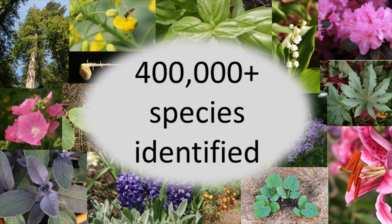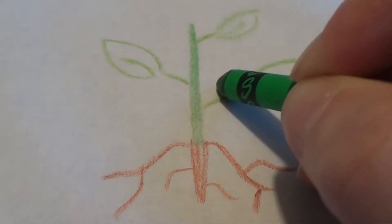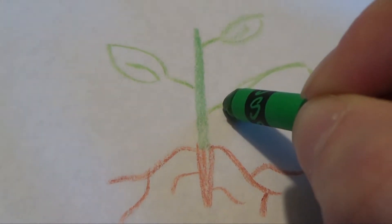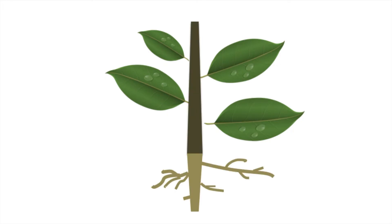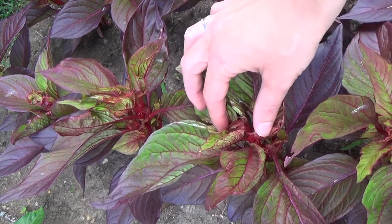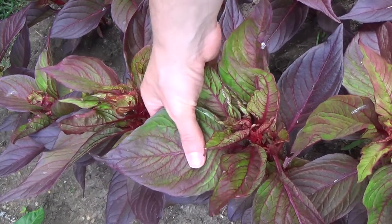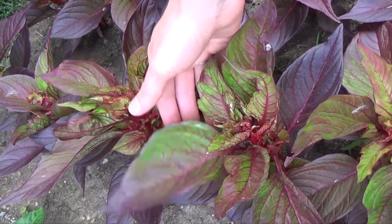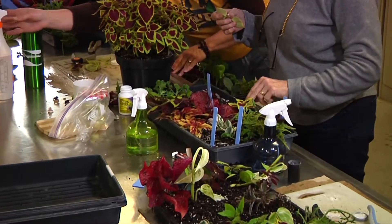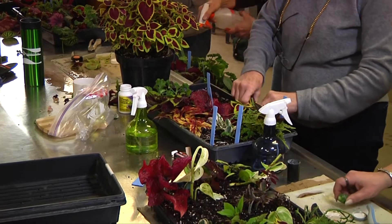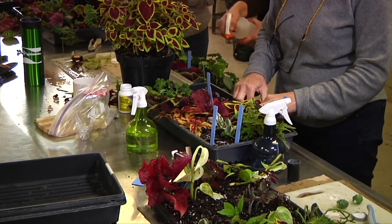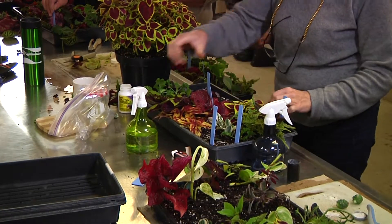However, even though there's a lot of variation in the plant world, plant anatomy can be thought of in a very simple way: a repetition of leaves, stems, roots, and growing points. Learning to identify the leaves, stems, roots, and the growing points of the plant can be helpful in gardening, in plant propagation, and in identification of things you don't recognize. Let's take a look at some of the basic plant parts now.